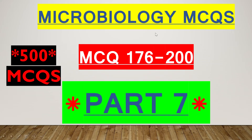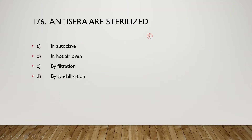Hello friends, today in this video I am going to discuss MCQs on general microbiology. This is the seventh part of the series of 500 MCQs on general microbiology. Let's start the question answer session on general microbiology with explanation. The first question is: antisera are sterilized by autoclave, hot air oven, filtration, or by tyndallization?